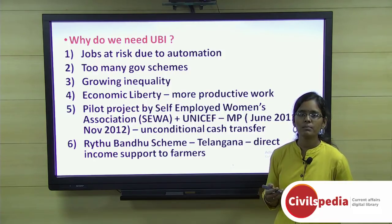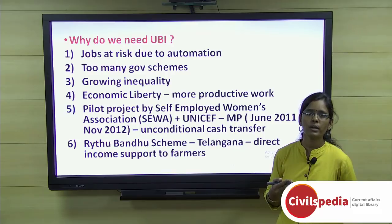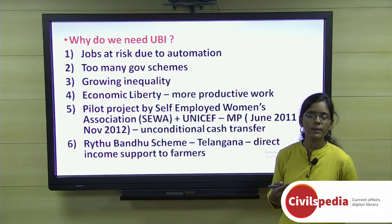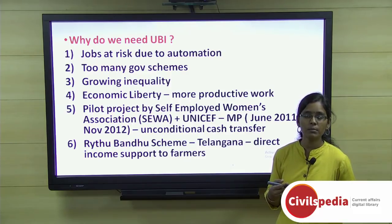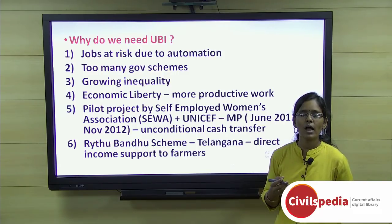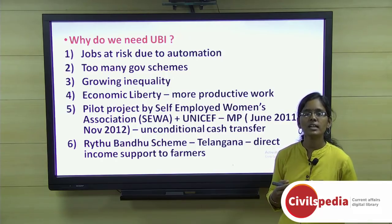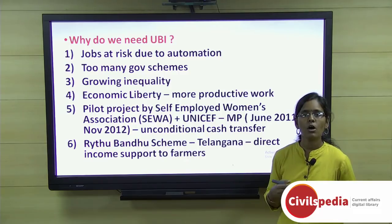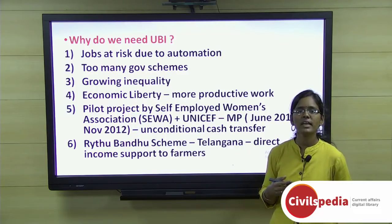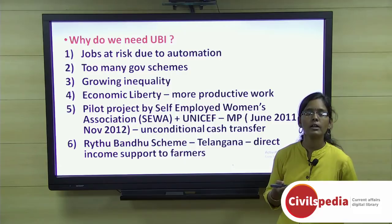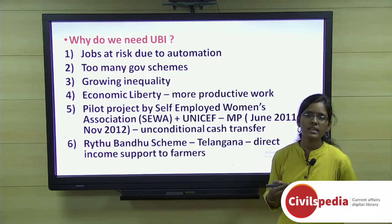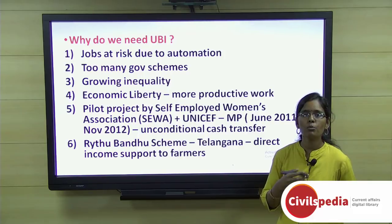The third argument is growing inequality: technically skilled people get good jobs and high salaries while unskilled people face wage inequality. UBI for lower-income people would give them time to reskill or upskill themselves to access better opportunities. Additionally, UBI provides economic liberty — once basic food and living needs are met at a minimum level, individuals show greater productivity in their work.